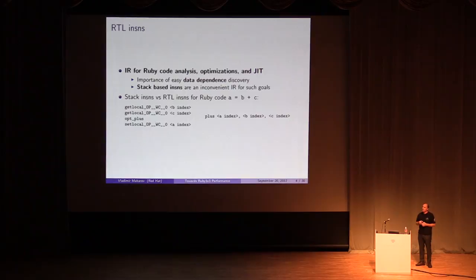Therefore, optimizing compilers never use stack instructions. Usually they use so-called tuples with explicit operands and results. Here you can see how an addition of two local variables and assigning the result to another local variable looks for stack instruction and RTL. For stack instruction, first we put values of variable b and c on the stack. Then plus instruction takes them from the stack, makes an addition and puts the result on the stack again. And the last instruction takes the result from the stack and assigns it to local variable a. For RTL, we just have one instruction with explicit operands and the result.